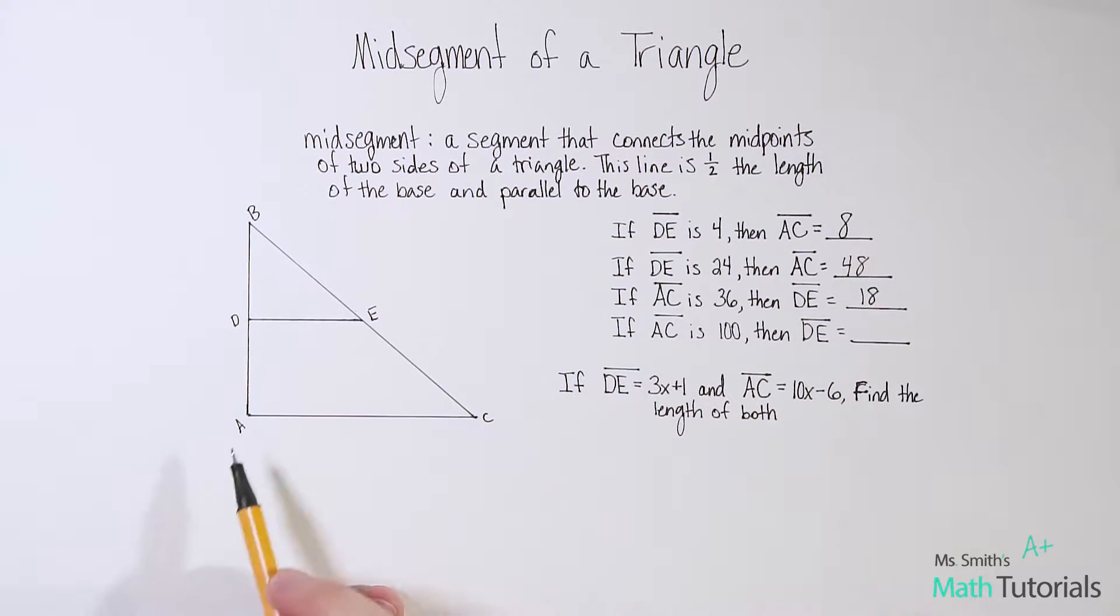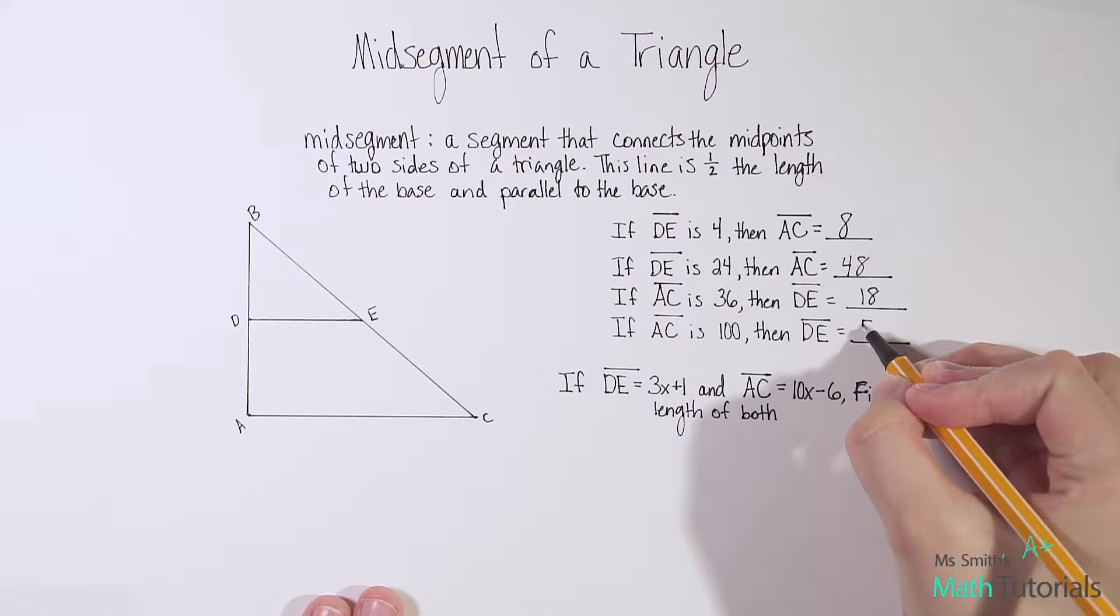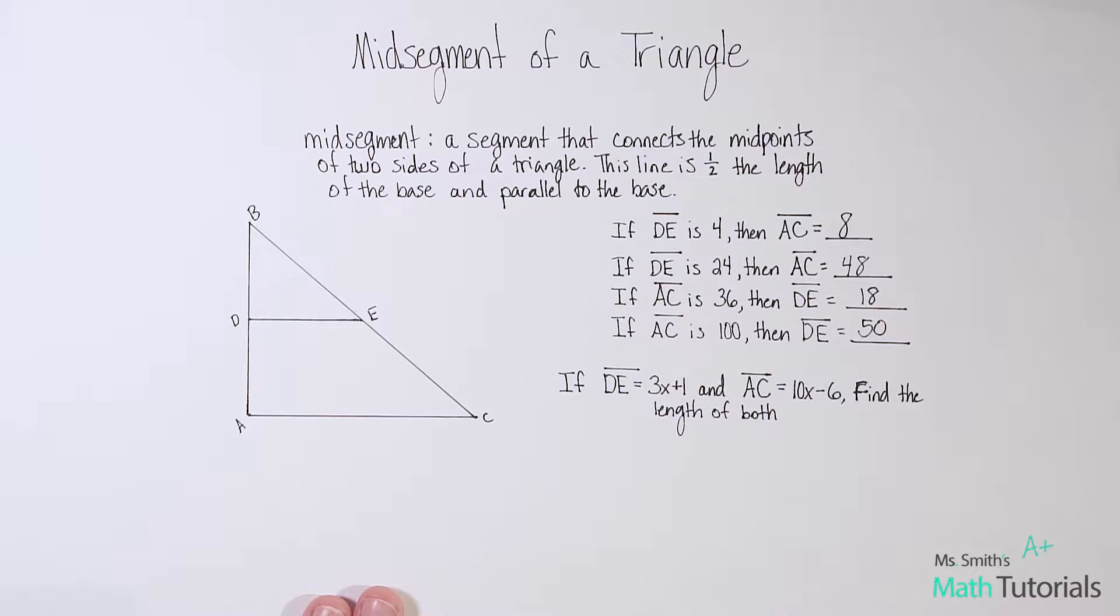And if AC, again, the base was 100, then DE would be half of 100, which would be 50. Now this says if DE, so if our mid-segment line was 3x plus 1, and AC, our base was 10x minus 6, find the length of both. So we want to be able to say what's the length of DE and what's the length of AC. So I've got to write an equation based on the relationship I know for mid-segments.